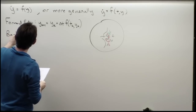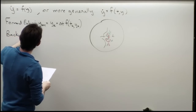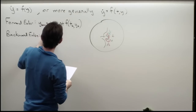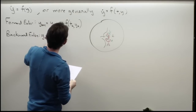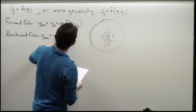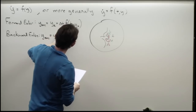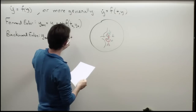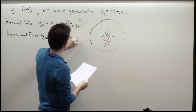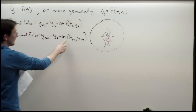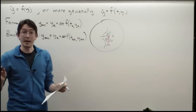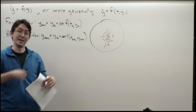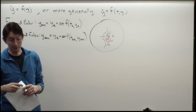Backward Euler is y_{k+1} equals y_k plus delta-t times F evaluated at t_{k+1} and y_{k+1}. So if this function f is at all nasty, it might be very hard to solve for y_{k+1}, my next point in the trajectory.